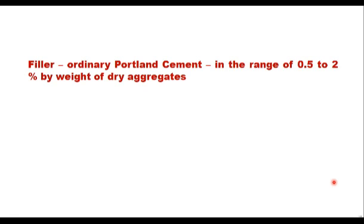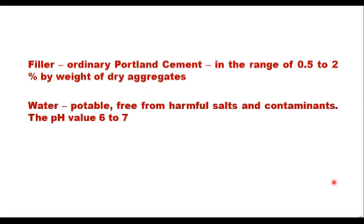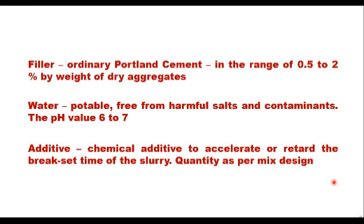The filler will be ordinary Portland cement and generally the quantity of filler shall be in the range of 0.5 to 2% by weight of dry aggregate. Water shall be potable, free from harmful salts and contaminants, and the pH value of the water shall be in the range of 6 to 7. Chemical additives may be used to accelerate or retard the break set time of the slurry or to improve the resulting finished surface. The quantity of additive shall be decided by mix design and adjusted as per climatic conditions such as humidity and temperature at site.